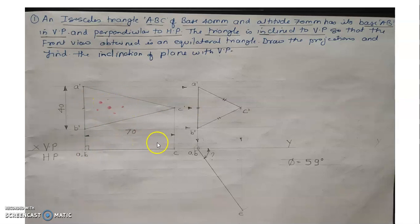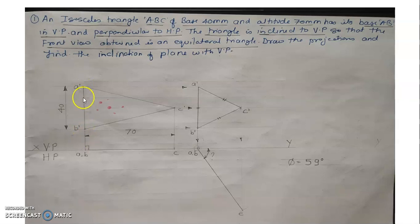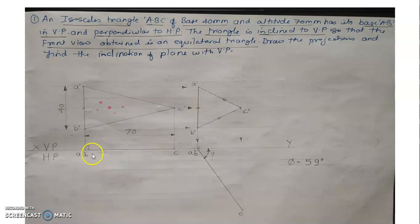Now plot the top view. While looking from the top, A' and B' are coming on a straight line, so A' and B' become a single point and C' is a single point. This is the front view A'B'C', and the straight line on the reference line is the top view.